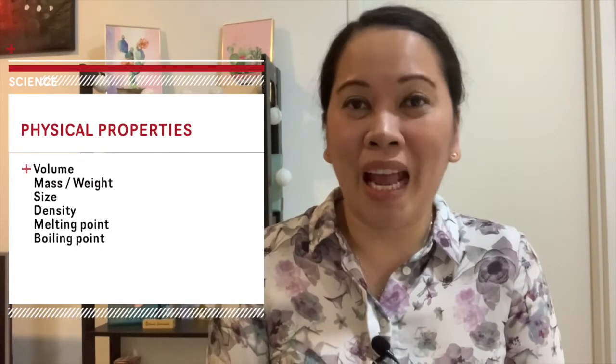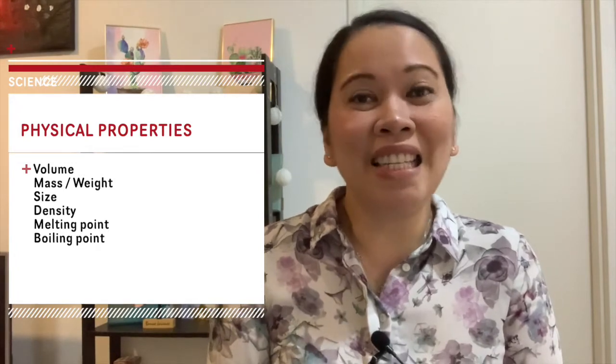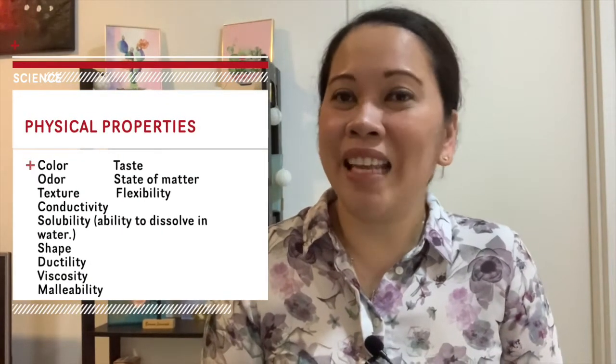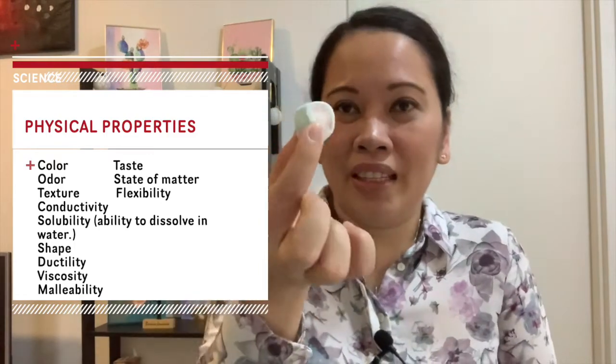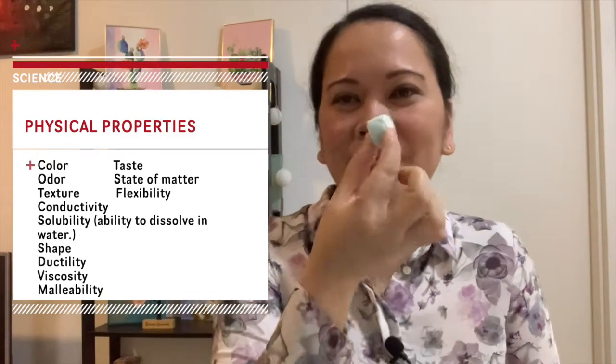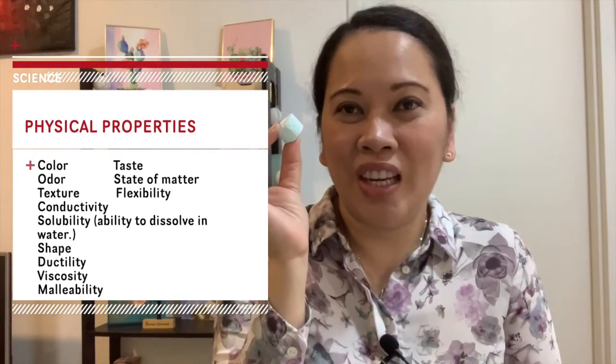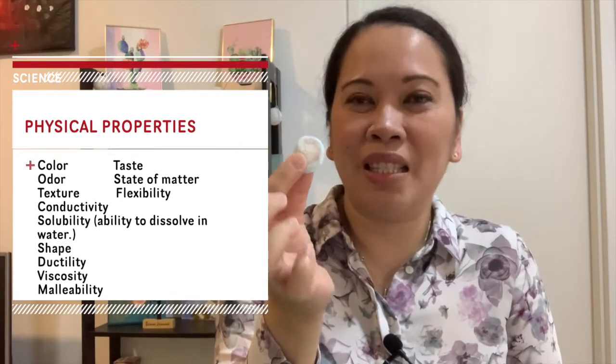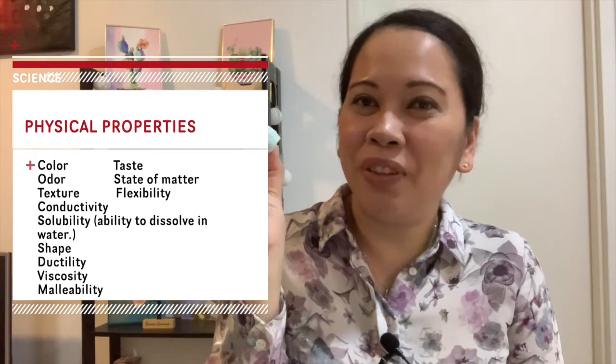Physical property examples include volume, mass or weight, density, melting point, and boiling point — these properties will never change for a given substance. Other physical properties also include color, taste, odor, and the state of matter. For example, this marshmallow — the odor doesn't change; it would still identify it as a marshmallow.